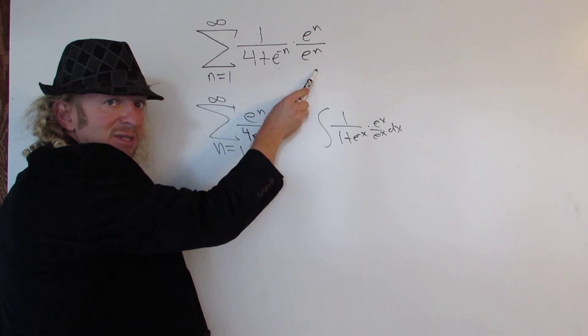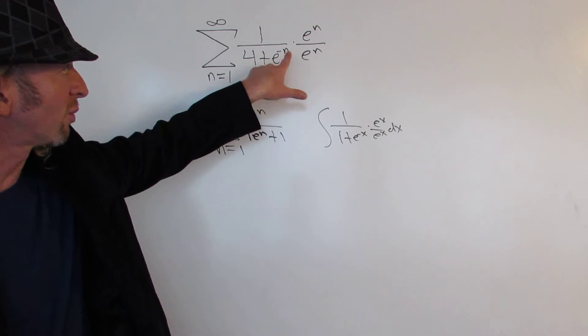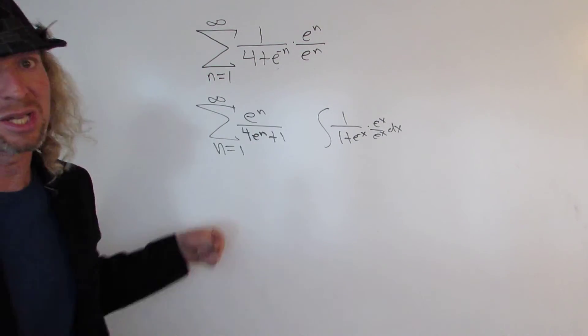And then e to the negative n times e to the n is 1. e to the negative n times e to the n is 1 because they cancel. You can also add the exponents. Negative n plus n is 0, so you just get e to 0, which is 1.